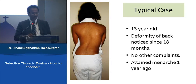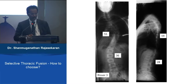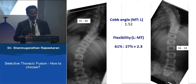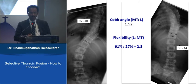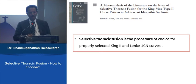A typical case would be a 13-year-old girl where the thoracic curve is 55 degrees and the lumbar is much smaller at 36 degrees. She is positive for thoracic kyphosis. The thoracic curve reduces only to 40 degrees on side bending, whereas the lumbar curve reduces from 36 to 14 degrees with a flexibility ratio of 2.3, meaning the lumbar curve is very flexible.